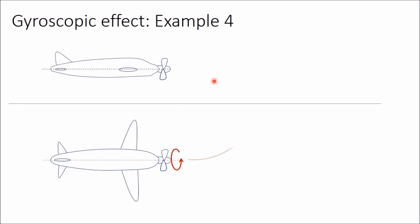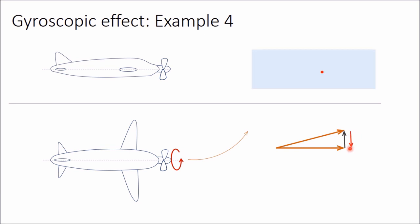Now if the plane is taking a left turn, you can draw the vector diagram again. This will be the initial angular momentum. Since it is taking a left turn, this should be the next angular momentum after some time dt. This will be the active gyroscopic couple, and just opposite to this will be the reactive gyroscopic couple. This reactive gyroscopic couple is acting towards us, so to obtain this vector using the right-hand screw rule you have to apply a couple in the anticlockwise direction — rotating a right-hand screw anticlockwise moves it towards you.